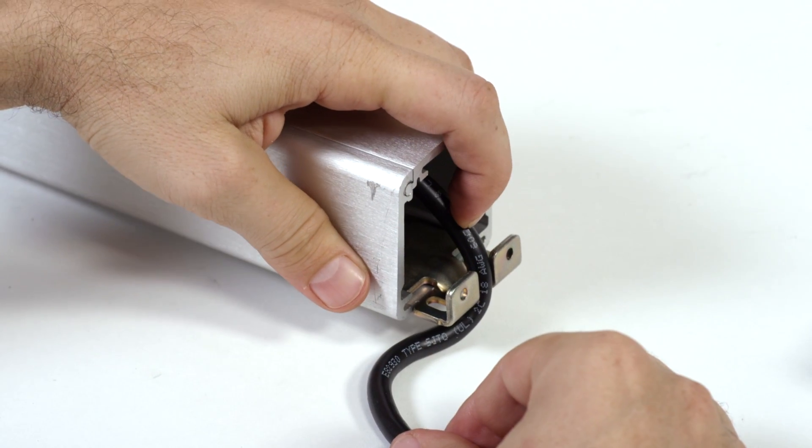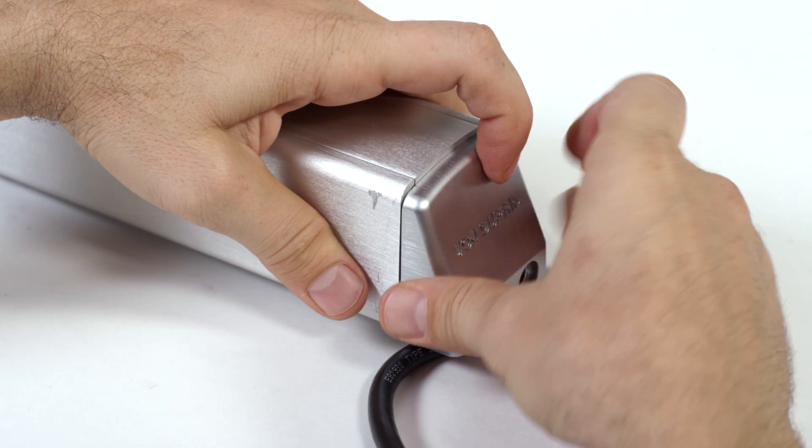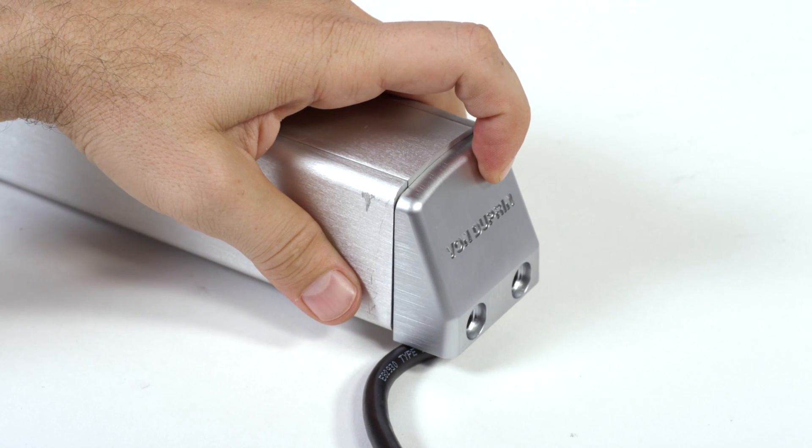The bracket screws are installed and power cable run through the door. The final step is installing the end cap using the two end cap screws.